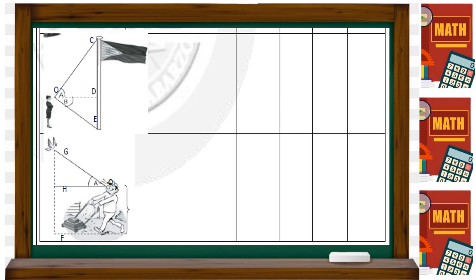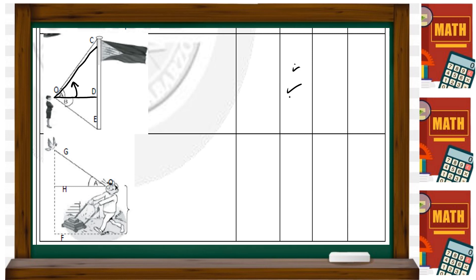That leaves you with two answers for numbers four and five. You'll have one horizontal line and two lines of sight. There will be an answer for angle of elevation and an answer for angle of depression. The line of sight going up is OC — that's the angle of elevation. Then use the second line for the angle of depression. So you'll have two line of sights and answers for both elevation and depression.